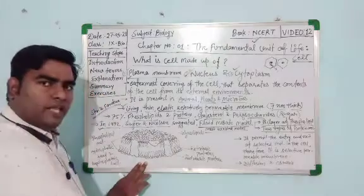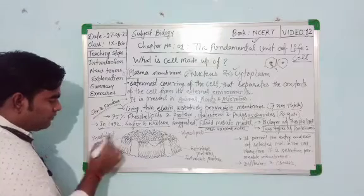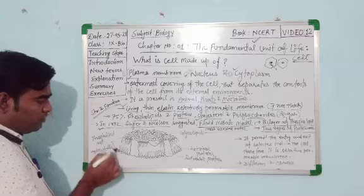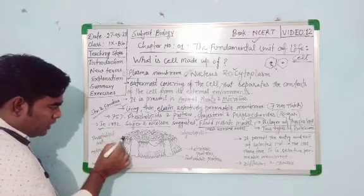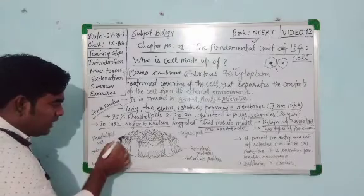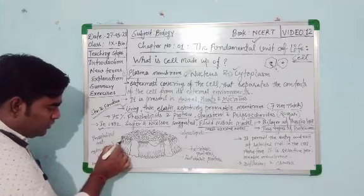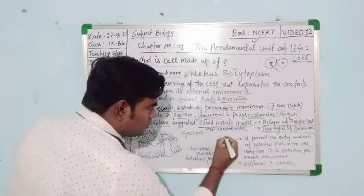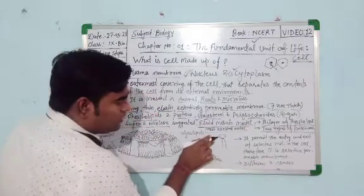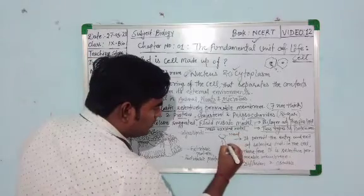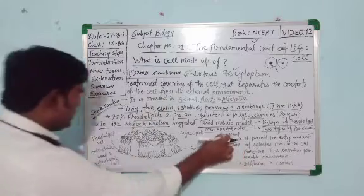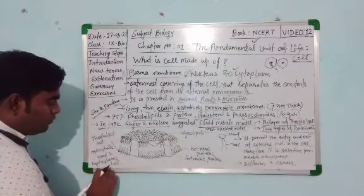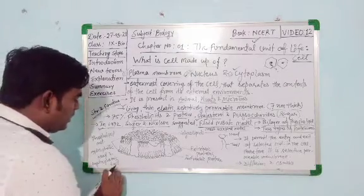This is the structure of phospholipid. You can see this is the first layer of phospholipid and this is the second layer of phospholipid — the phospholipid bilayer. One part, this head, is a hydrophilic head, whereas the tail of this phospholipid is a hydrophobic tail. The hydrophilic head attracts towards water, and the hydrophobic tail repels water.